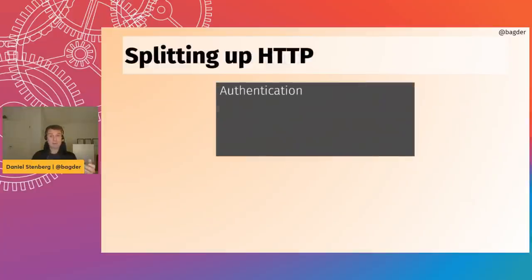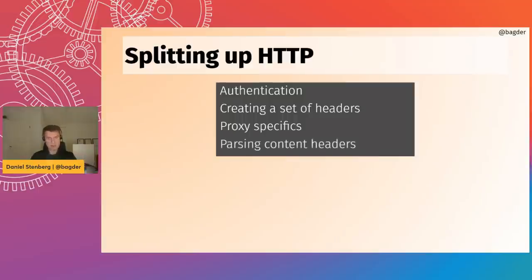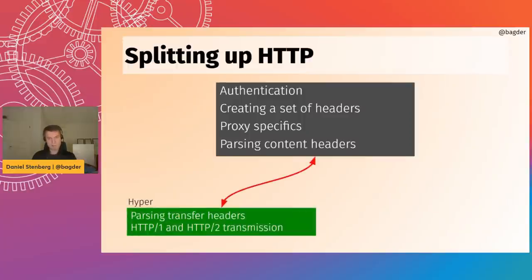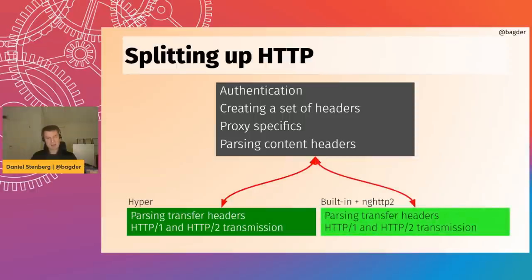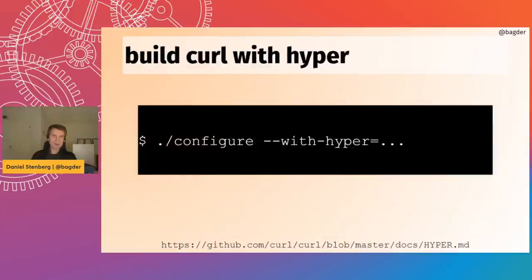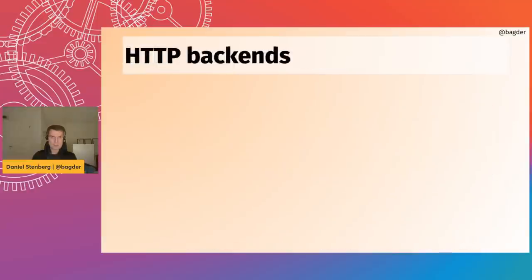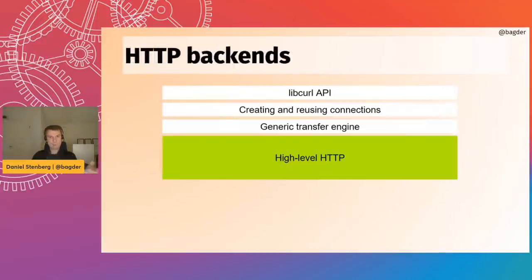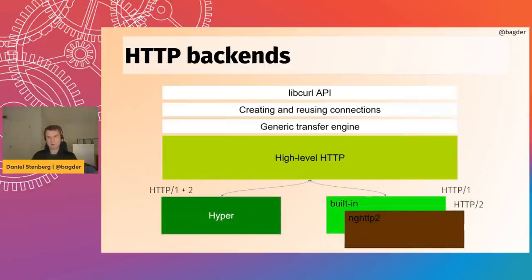When we brought hyper — the Rust alternative HTTP implementation — into the mix, hyper is very transmission-focused, so it doesn't support everything we need. Authentication, some request headers, proxy stuff, and content parsing are not what hyper provides. So I took all the things hyper doesn't support and made them into a generic part of libcurl's HTTP code, then split out the parts hyper can handle — transfer header parsing and transmission — so at build time you can choose hyper or the native code.